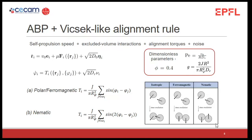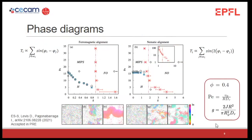By performing Brownian dynamics simulations we built phase diagrams, each corresponding to a different type of effective torque. Moving left to right increases alignment strength G; particles transition from disordered to ordered orientational states. Moving bottom to top increases the Péclet number, making the system more active. In the absence of alignment, people have reported a MIPS phase separation from homogeneous to phase-separated state. These phase diagrams present very different features depending on whether we add ferromagnetic or nematic alignment.